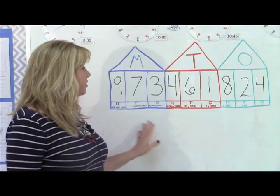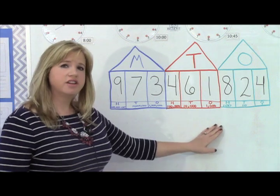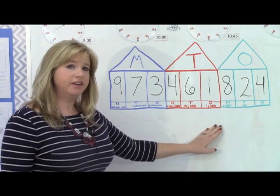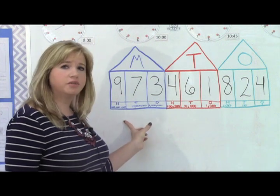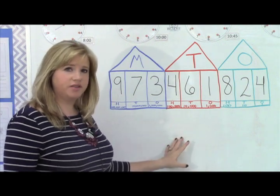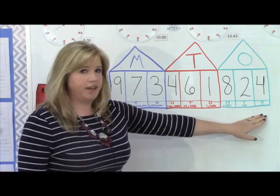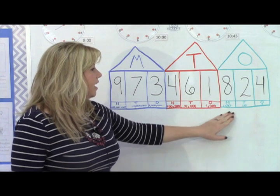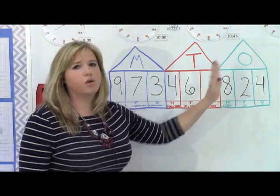What I did was I put together a series of houses to show your child the different periods, which is what we call them when you group together the different place values. The first one that we have is your ones place, your tens place, and your hundreds. So I put this under the ones house.